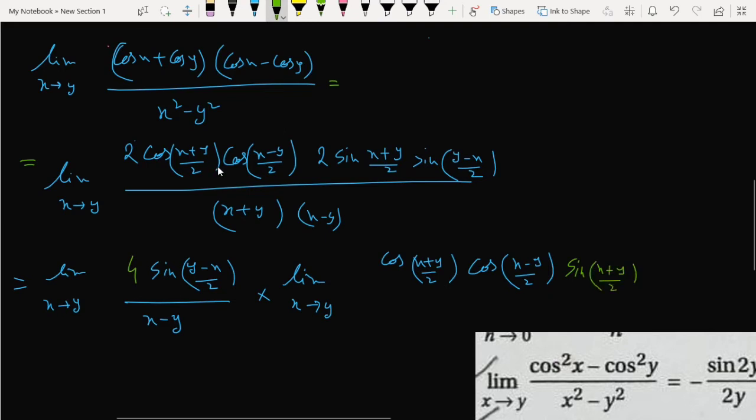If we put the limit here, we will find cos((y+y)/2), that is 2y/2, which is y, times cos((y-y)/2). Y minus y means 0, cos(0) is 1, basically. Therefore it is 1, times cos y.